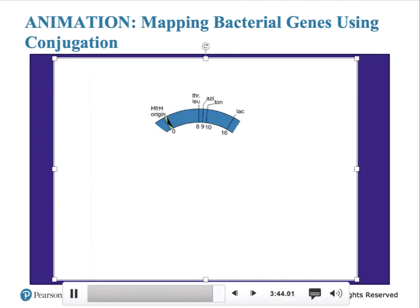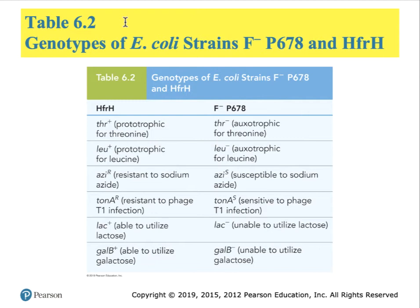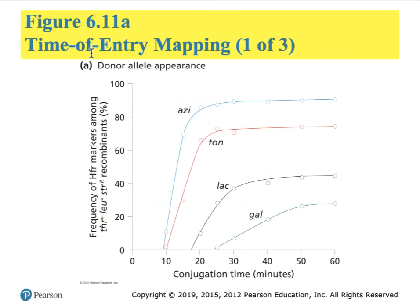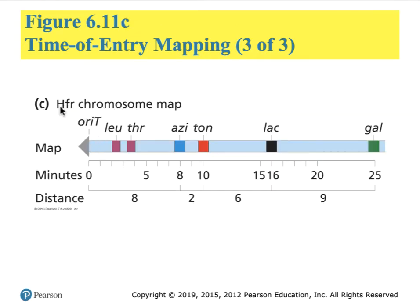In this interrupted mating experiment, each gene appears at a different time, indicating its relative position on the bacterial chromosome. The map units between genes are expressed in minutes. The entire E. coli chromosome requires about 100 minutes to transfer all of its DNA. Table 6.2 reiterates the abbreviations used and the biochemical outcomes. The time of entry maps can also be converted to graphical data where the conjugation time is related to the frequency of transfer of those markers into recombinant bacterial recipients. Figure 6.11b shows the map generated from this particular strain of E. coli with minutes given.